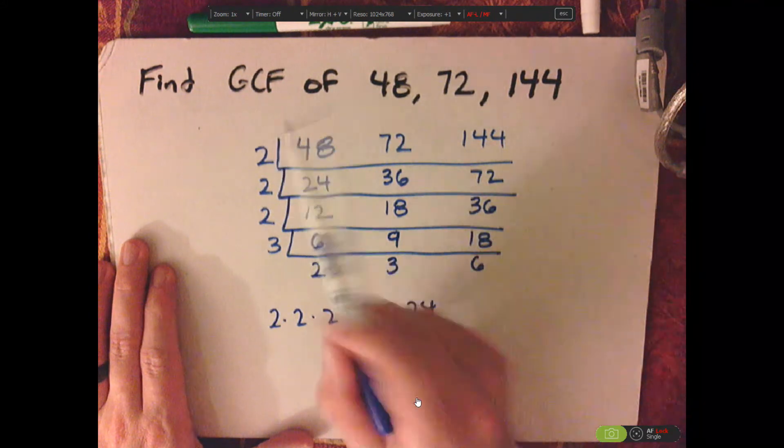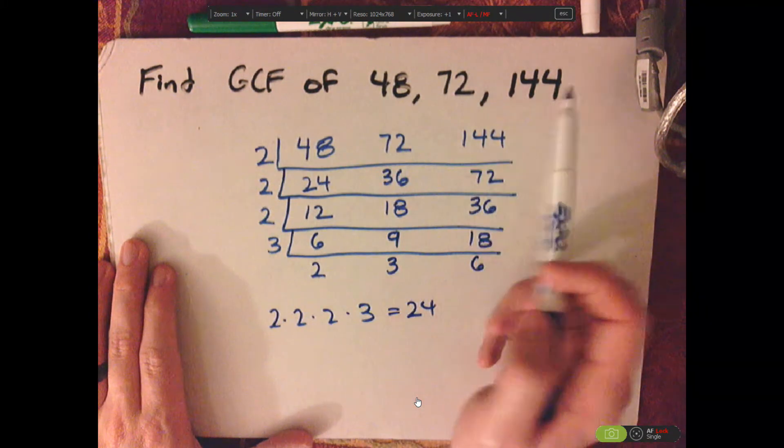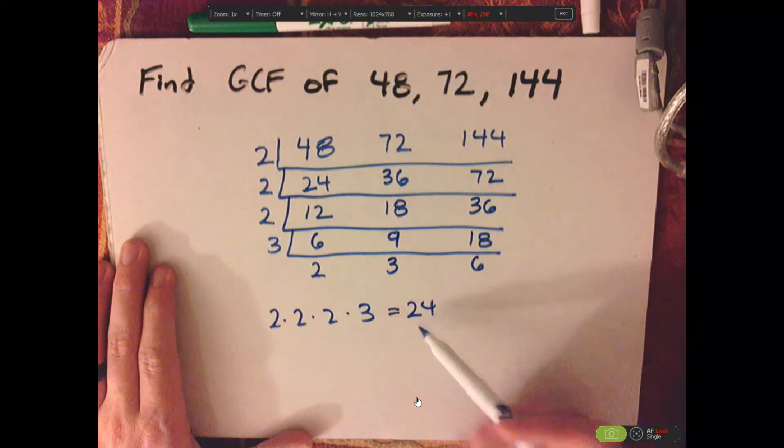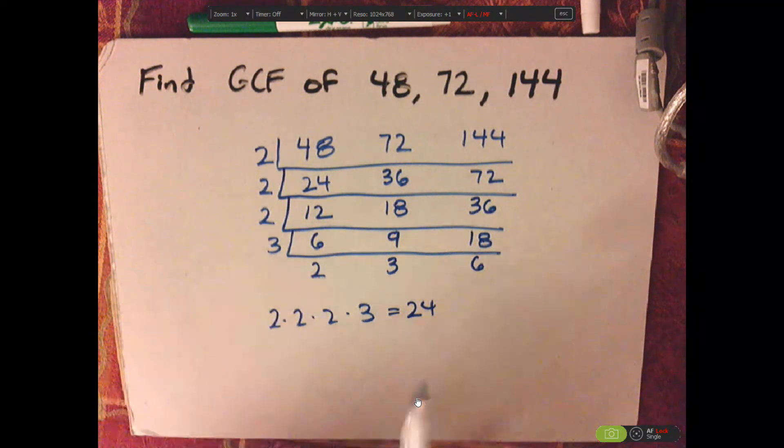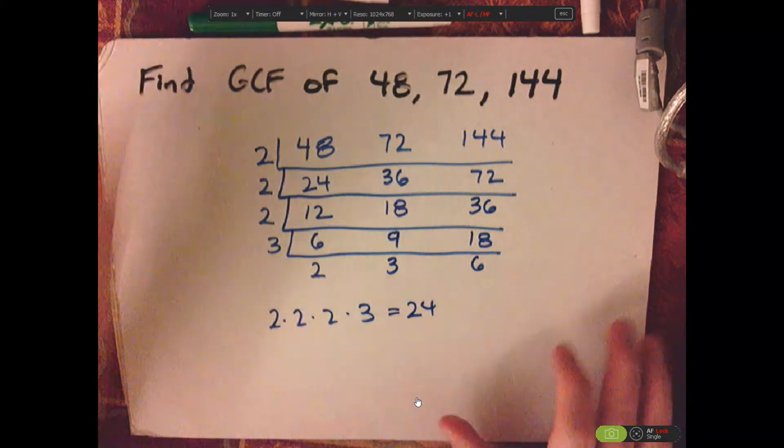So the GCF of 48, 72, and 144 is 24. And that's it.